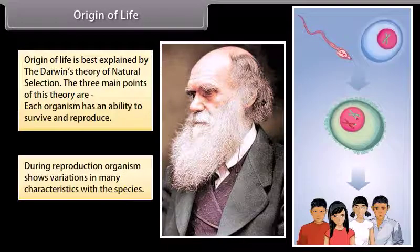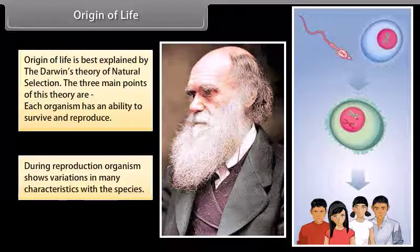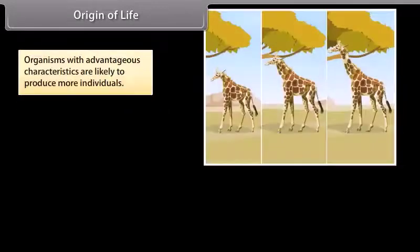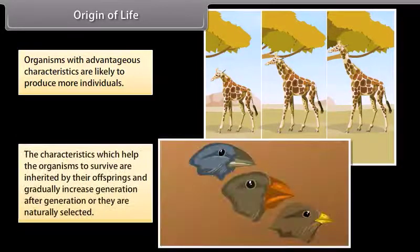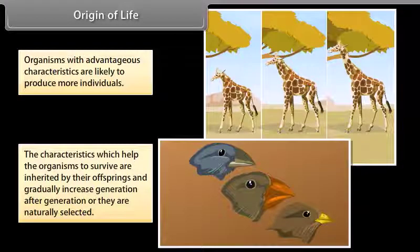During reproduction, organisms show variations in many characteristics within their species. Organisms with advantageous characteristics are likely to produce more individuals. The characteristics which help organisms to survive are inherited by their offspring and gradually increase generation after generation, or they are naturally selected.